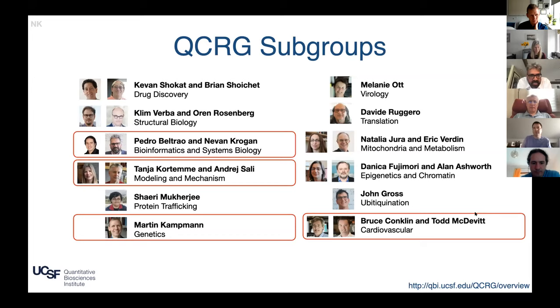First one is led by Pedro Botreo talking about bioinformatics and systems biology. He's going to go through some new interesting data sets that we've compiled, and then Tanya and Andre are going to be talking about modeling and mechanism, followed by Martin Campman who's leading the genetic subgroup, and then finally Todd and Bruce will be talking about some cardiovascular work. Each group is going to have 10 minutes to present and then at the end we'll take questions. Please type your questions into the Q&A.